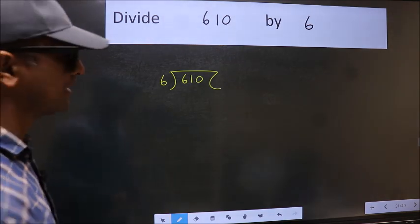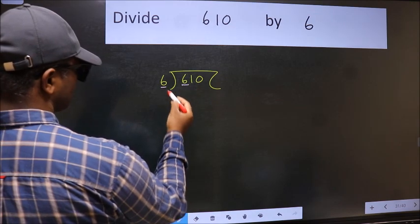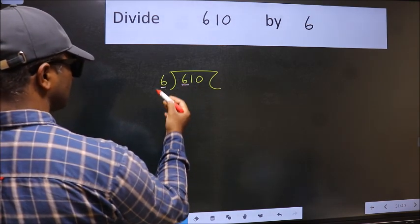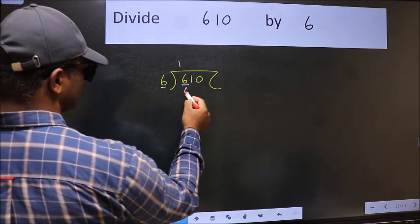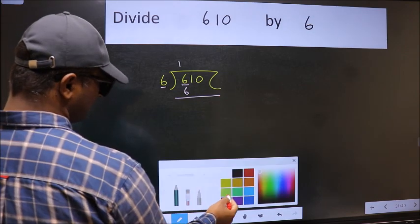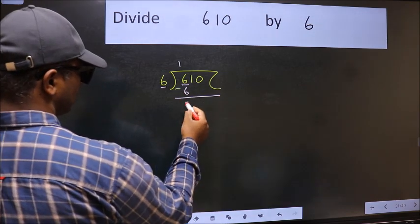Next, here we have 6, here also 6. When do we get 6 in the 6 table? 6 times 1 is 6. Now we should subtract. We get 0.